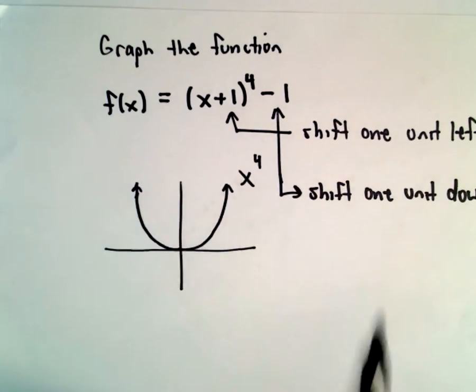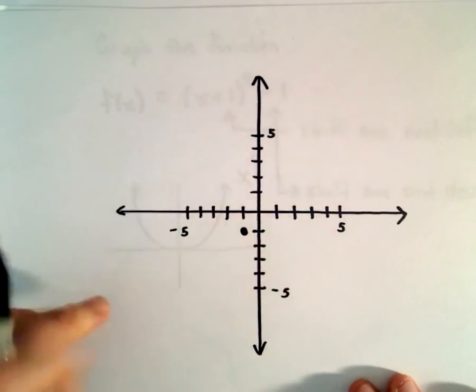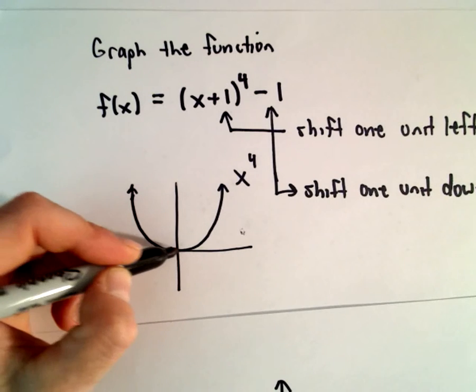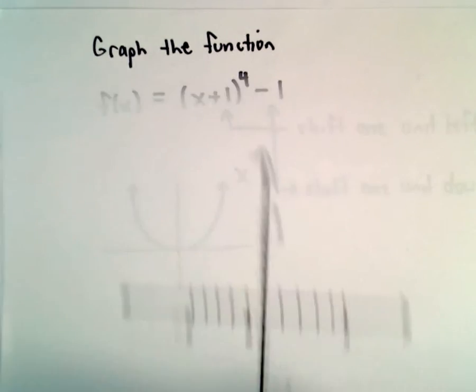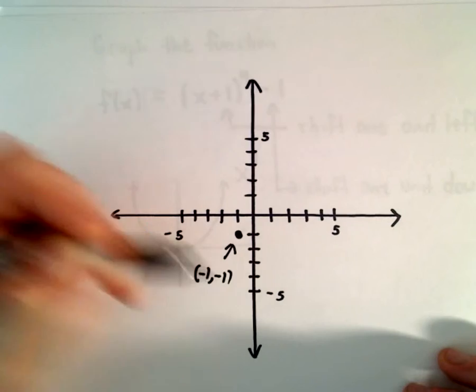If you're not sure, you can always plot points. That's one thing people sometimes forget about doing. Instead of passing through the origin (0,0), since it's one to the left and one down, it'll pass through the point (-1,-1).